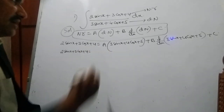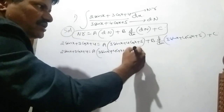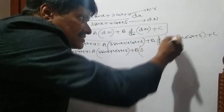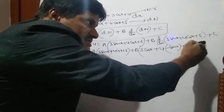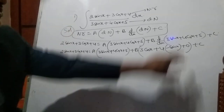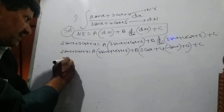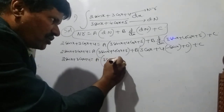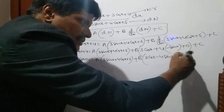So: 2 sin x + 3 cos x + 4 = a(3 sin x + 4 cos x + 5) + b times the derivative of the denominator. The derivative of (3 sin x + 4 cos x + 5) is 3 cos x − 4 sin x. So the first equation is: 2 sin x + 3 cos x + 4 = a(3 sin x + 4 cos x + 5) + b(3 cos x − 4 sin x) + c.